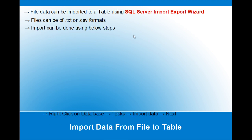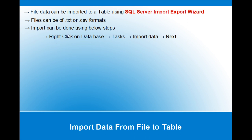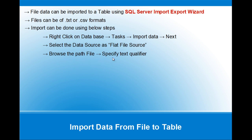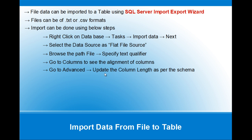The import can be done using the following steps. Go to the target database where you want to import the file, right-click on the database and choose Tasks, then Import Data, and click Next. It will show the data source — select flat file as the source in the drop-down. Browse the file path and specify the text qualifier. Then go to the Columns tab to see the alignment of columns. Go to Advanced and update the column length as per the schema. Go to the Preview tab to see how the data looks, and click Next.